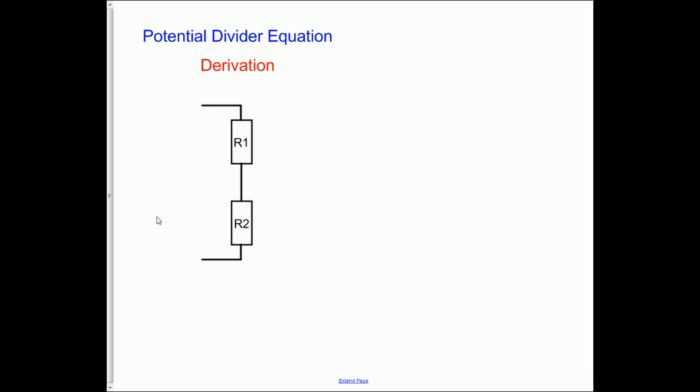This lesson is about deriving the potential divider equation. The two resistors you see on the board make a potential divider, and we need something to divide. So we'll start by adding a potential in the form of a battery. We'll make the bottom 0 volts and the top V_in, and later we'll give this some numbers.